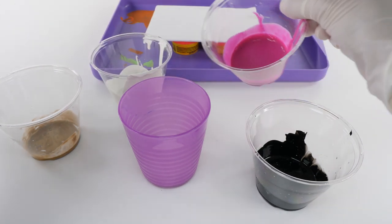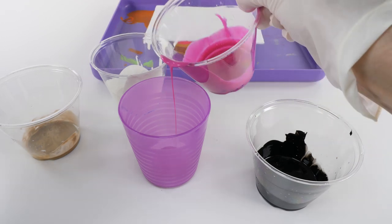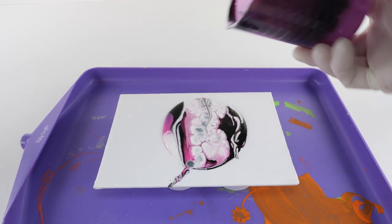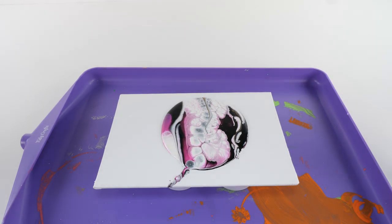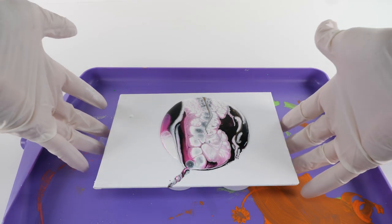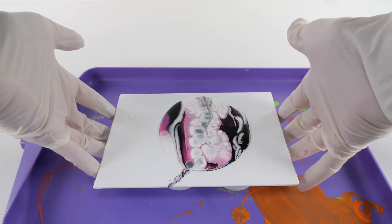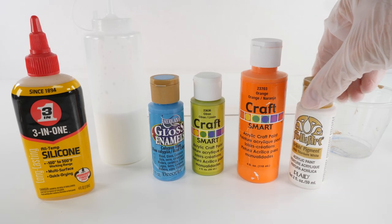This is the footage from the first one that I did. You can see I used four different colors and added them all to one cup, then flipped the cup on top of the canvas. The paint was not as thin as it needed to be, so I'm gonna fix that today.